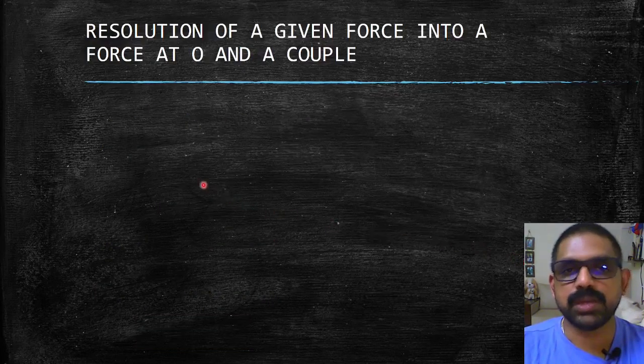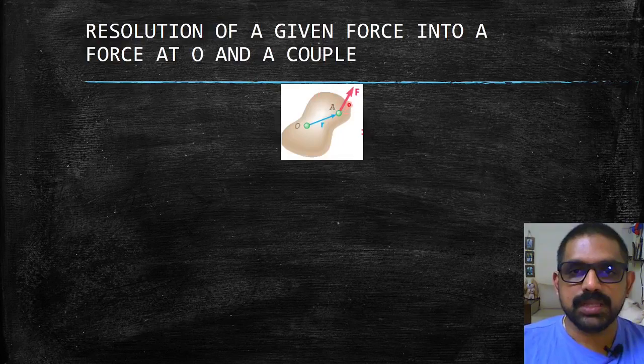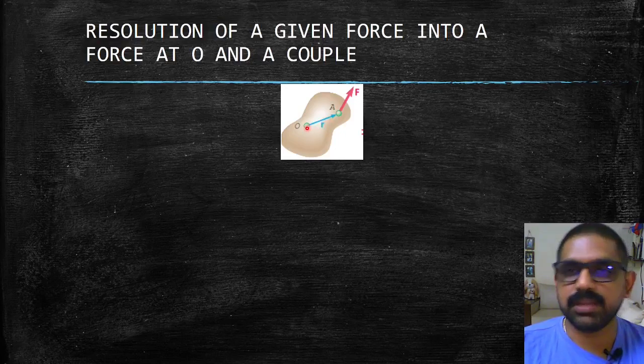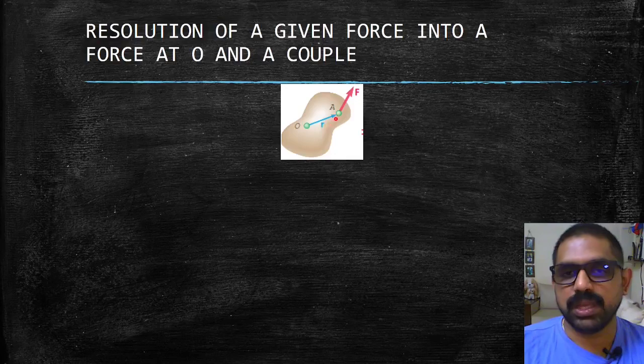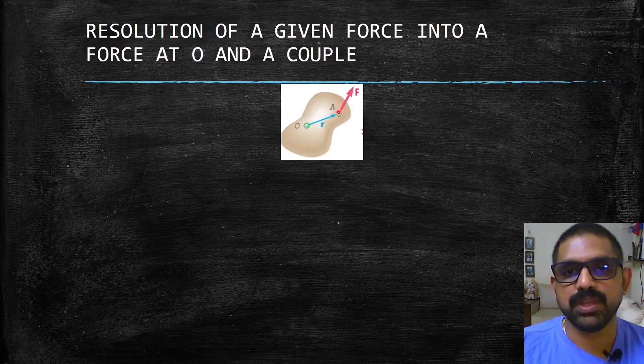Let us consider a rigid body. Here a force F is acting at point A. Let us consider another point on the same body, O. If this body is in this state and I want to know the effect of this force F on the point O, what would I do? I would just take the moment of this force F, that is r cross F.